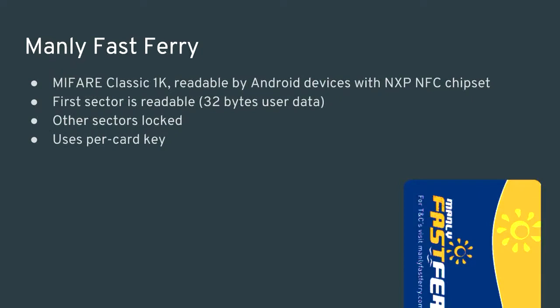After success with the Opal card, I moved on to the Manly Fast Ferry, a private ferry operator in Sydney. They use their own card system introduced in 2009 — a MIFARE Classic 1K card, which is an older card system and not standard NFC, so it can only be read by phones with an NXP chipset. The first sector is readable with 32 bytes of data, but the other sectors are unreadable, locked with a per-card key.